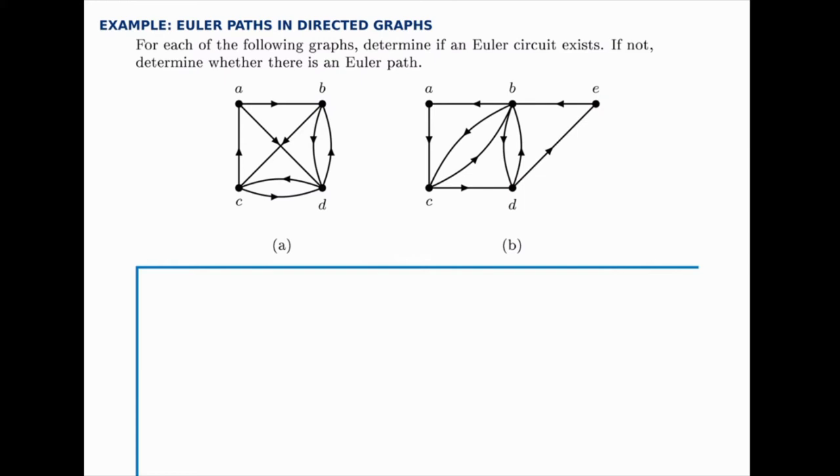So it's similar to Euler paths and circuits with undirected graphs, but with directed graphs we're going to look to see if all the in-degrees and out-degrees for each node are the same. So if each node is consistent with its in-and-out degrees, if so there's an Euler circuit. So if each node has an equal in-and-out degree, then we know that there's an Euler circuit.